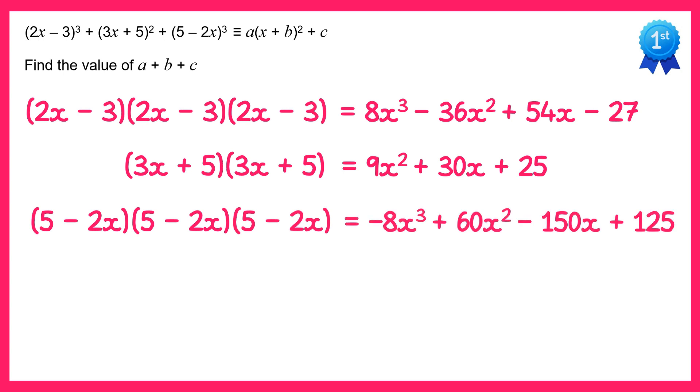Since we're going to add all three of these results together, it's just a case of collecting like terms. Let's start with terms in x cubed. We've got 8x cubed take away 8x cubed, so that's 0. For x squared we've got negative 36x squared plus 9x squared plus 60x squared, which simplifies to 33x squared.